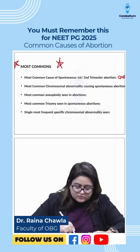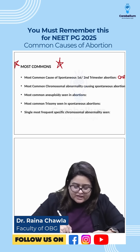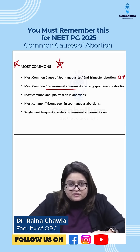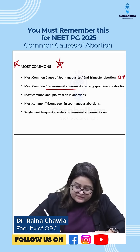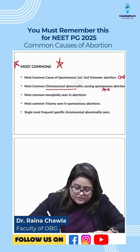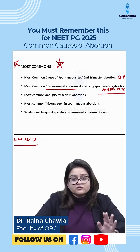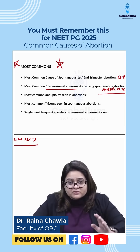Next question: what is the most common chromosomal abnormality causing spontaneous abortion? The answer is aneuploidies — not euploidies. Aneuploidies are the most common chromosomal abnormality causing spontaneous abortion.